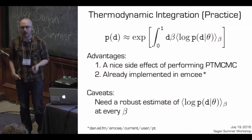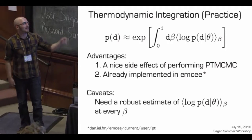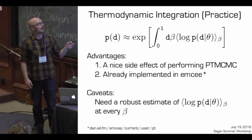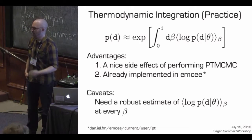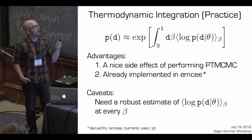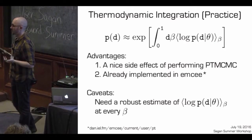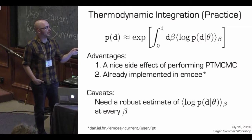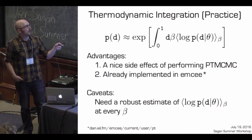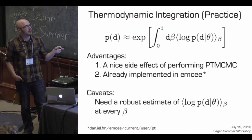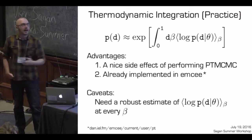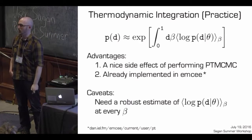Advantages: if you're already using parallel tempering MCMC for parameter estimation, computing the evidence is a nice side effect — you have all the information available. It is already implemented in emcee, and Dan wrote a method to compute the evidence through thermodynamic integration. Some caveats: you really need a robust estimate of the average log likelihood at every beta. If you don't sample well enough at one particular temperature, the value will be skewed, and when you integrate over all d-beta you'll get an off value for the evidence.